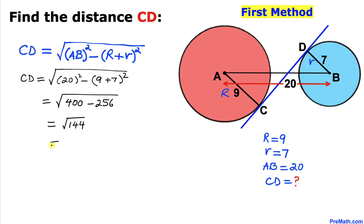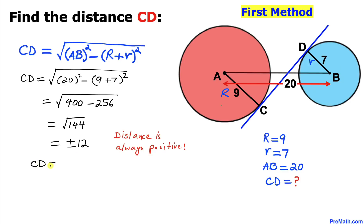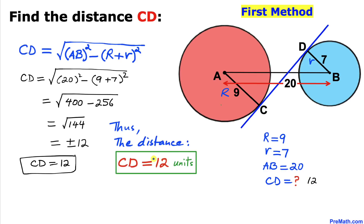The square root of 144 is positive or negative 12. Since we are dealing with distance, which is always positive, CD = 12. So the distance CD turns out to be 12 units.